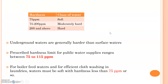Looking at standard values of hardness: from 0 to 75 ppm is considered very soft water; 75 to 120 ppm is slightly hard; 75 to 200 ppm is moderately hard; and 200 ppm and above is considered hard water. If it goes above 500 ppm we say it is very very hard.